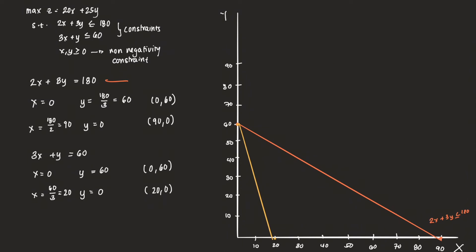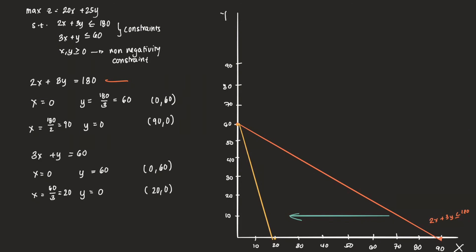Based on the constraint set, the first two constraints are less-than constraints, which means that everything to the left of these lines can be part of the feasible region. If the constraints were greater-than, everything to the right would be included. We need to satisfy both constraints, so the overlapping area on the left of both lines is the feasible region. And that is how to graph the feasible region in linear programming.